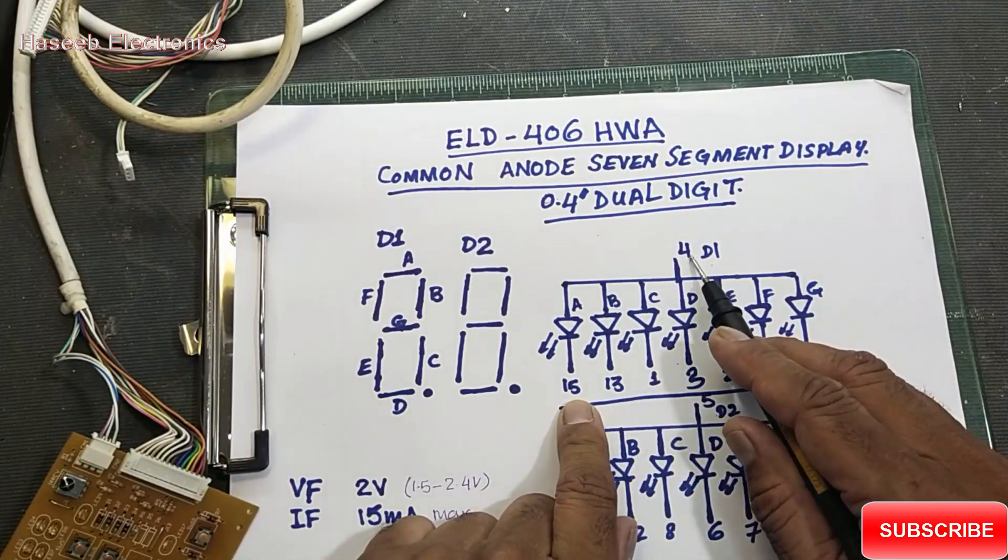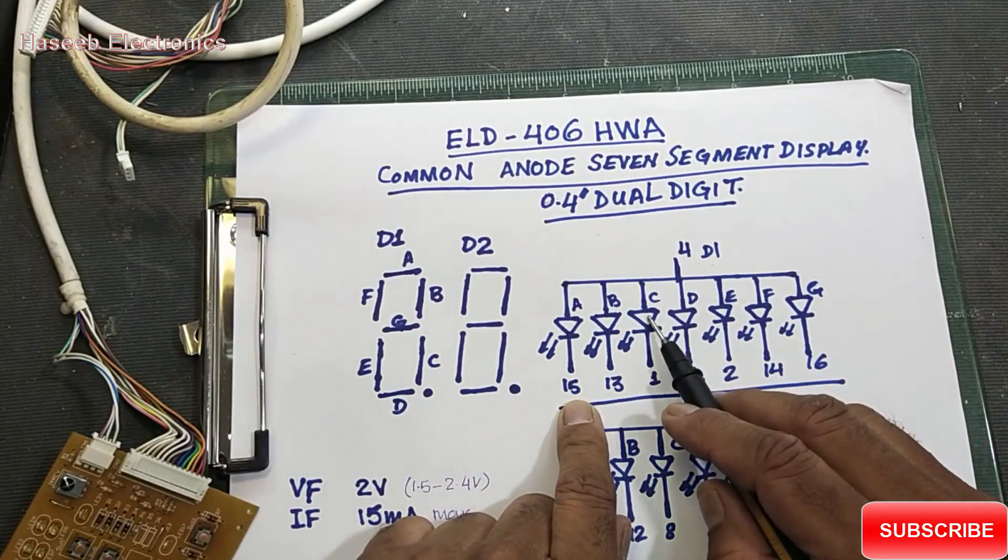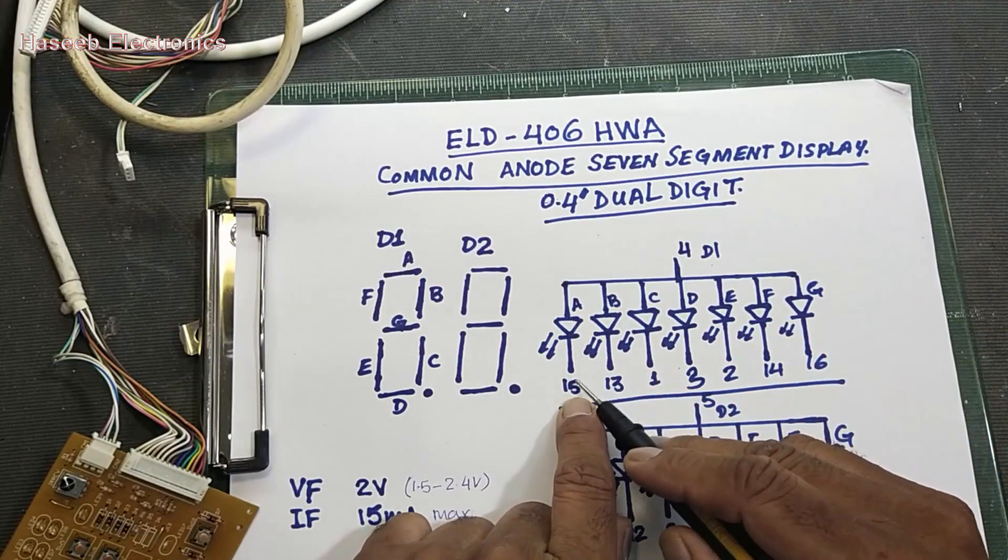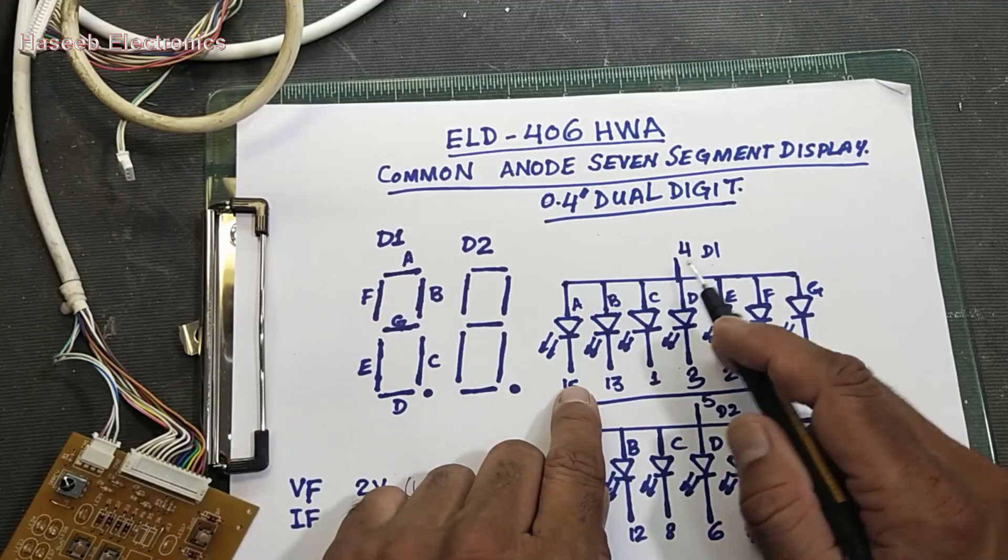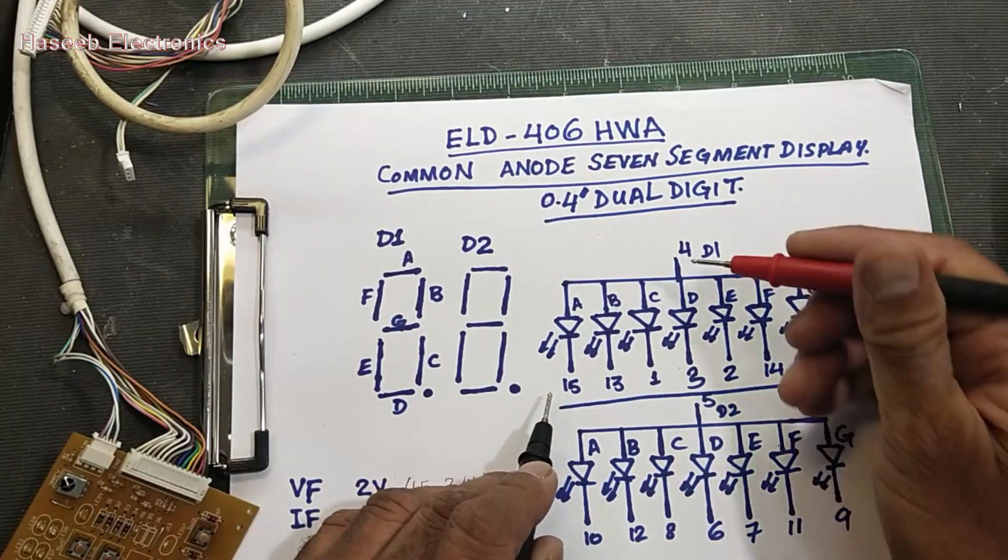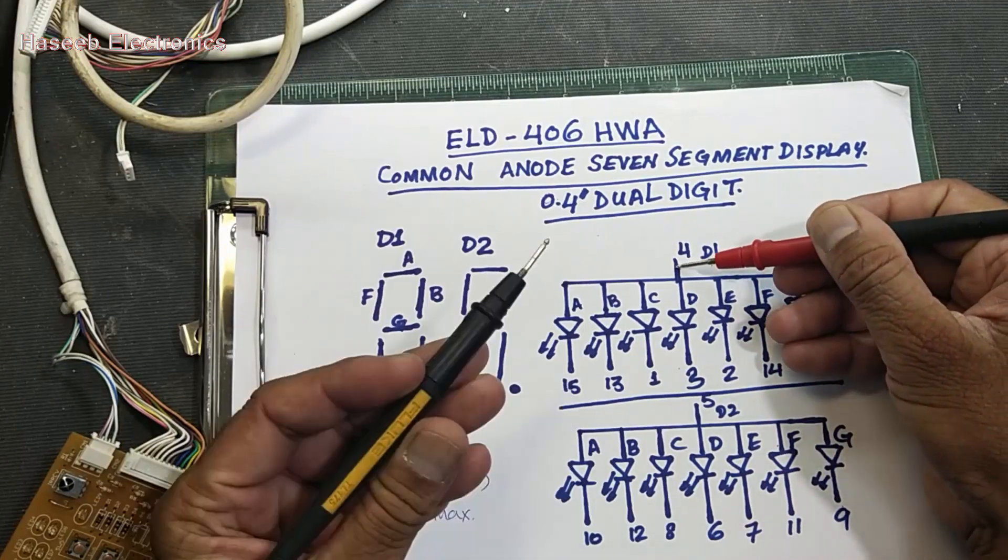And pin number 4, that is common anode. As we discussed, common anode pin number 4 is common. So if we connect multimeter in diode mode, positive at pin number 4 and black lead at pin number 15, segment A will glow.